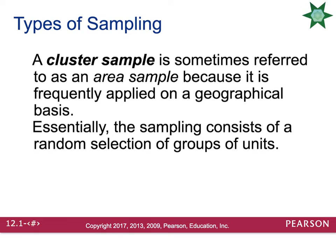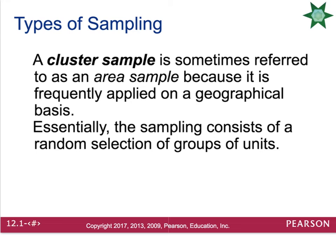A cluster sample is sometimes referred to as an area sample because it's frequently applied on a geographical basis. The sampling consists of a random selection of groups of units. For example, if we looked at the United States and subdivided it into 50 states and were trying to figure out who was going to win the presidential election, we can look at the cluster of the state of Colorado and use that cluster to predict what the entire United States is going to do. Ideally, you won't use just one cluster — you'll use more than one, otherwise you don't really have a random sample.